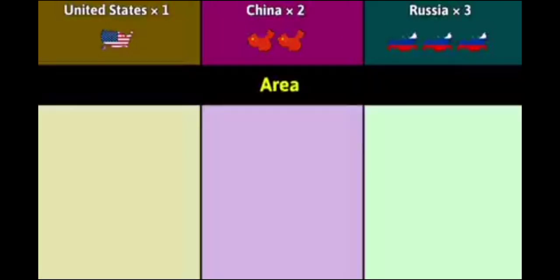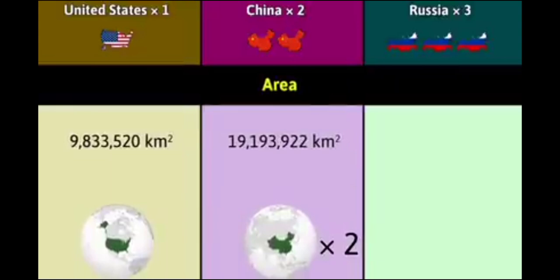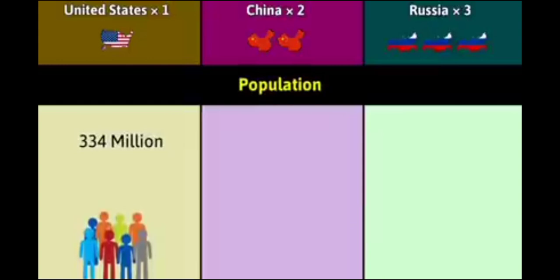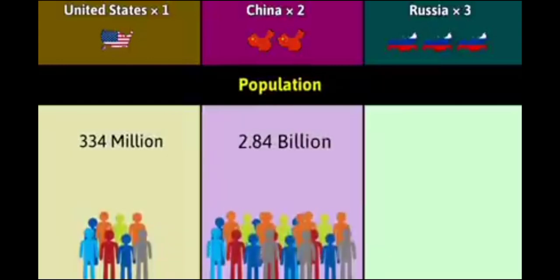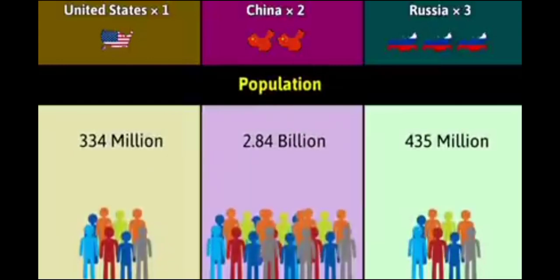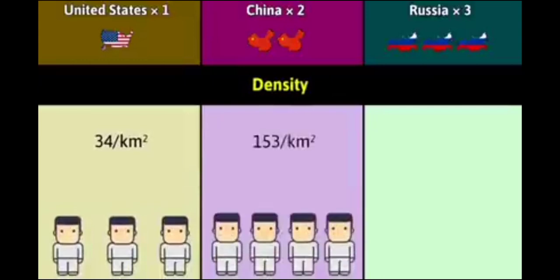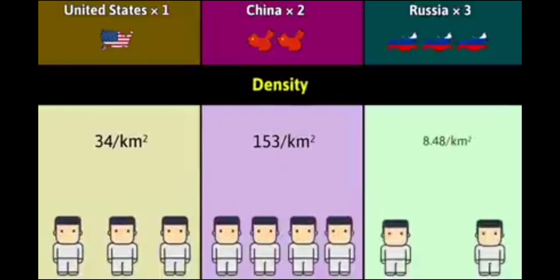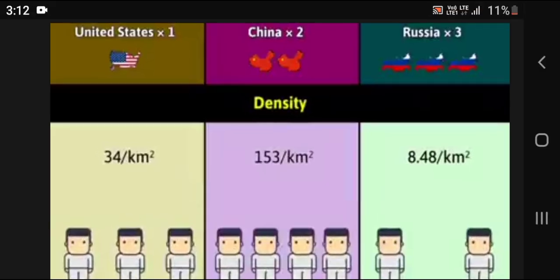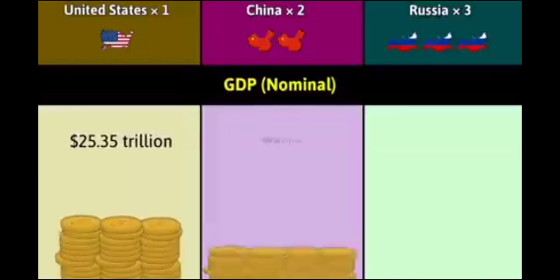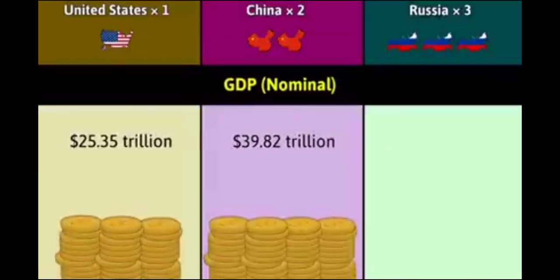Area: 9.83 million square kilometers, 19.19 million square kilometers, 51.29 million square kilometers. Population: 334 million, 2.84 billion, 435 million. Density: 34 per square kilometer, 153 per square kilometer, 8.48 per square kilometer.